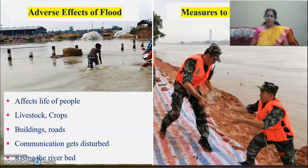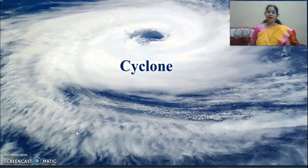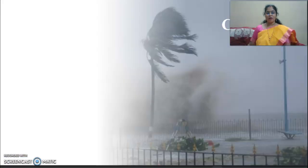The adverse effects of flood include loss of human life, livestock, crops, buildings, and roads, and disruption of communication. To overcome floods: strengthen and raise the height of riverbanks, ensure soil protection, construct more dams, and evacuate people from flood-prone areas.